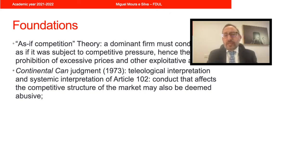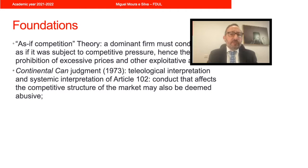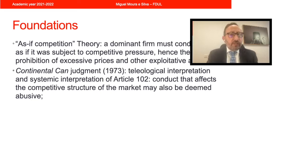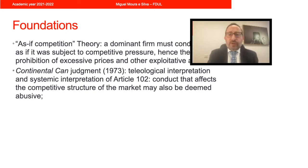In Continental Can, one of the landmark cases by the European Court of Justice of 1973, the Court made clear that Article 102 is to be interpreted following a teleological interpretation, as well as a systematic interpretation of Article 102 together with Article 101, and in view of the overall goals of the treaty. So conduct that affects the structure of the market, even though it does not directly affect consumers or trading partners of the dominant firm, is also subject to the prohibition. Conduct that harms the structure of competition may also run afoul of Article 102.